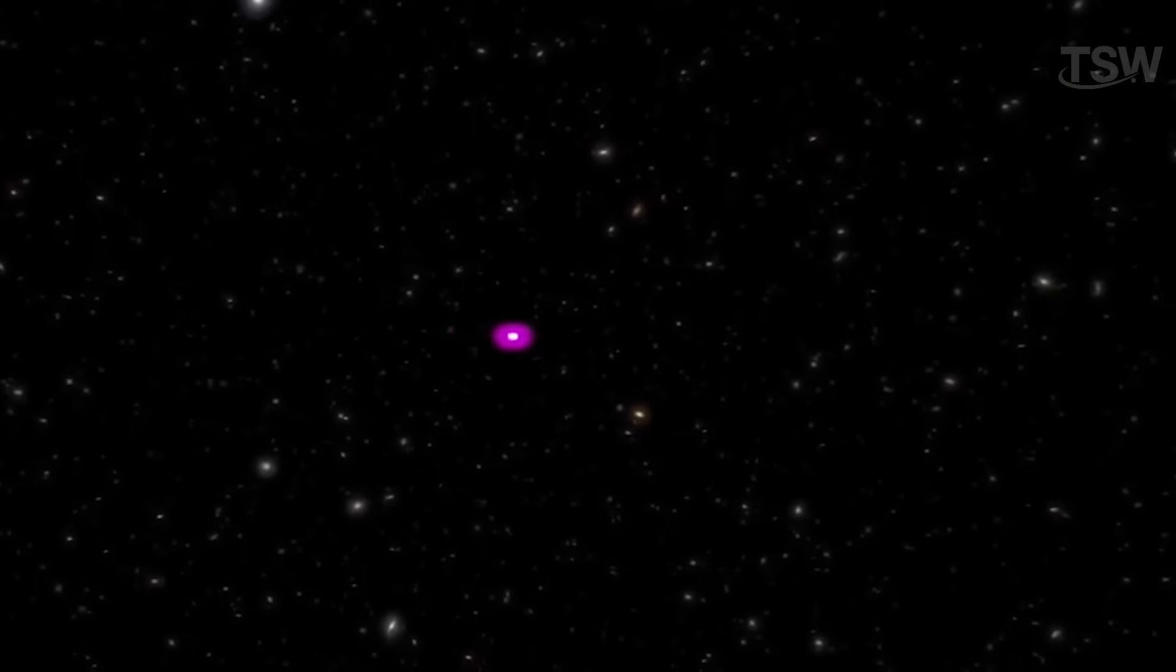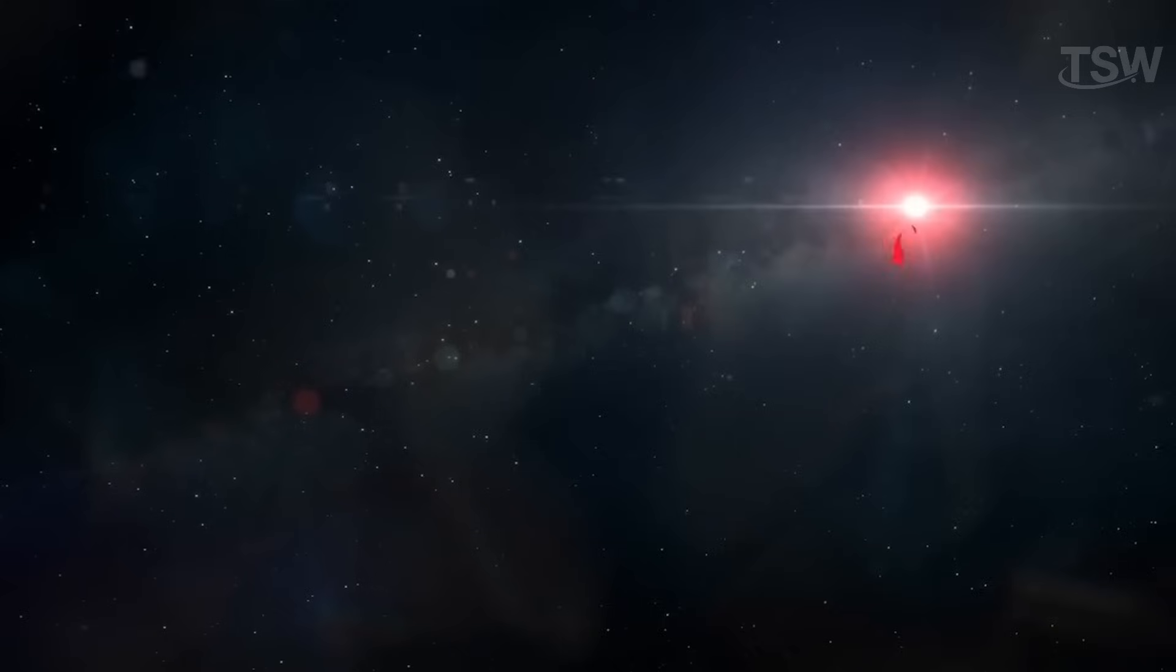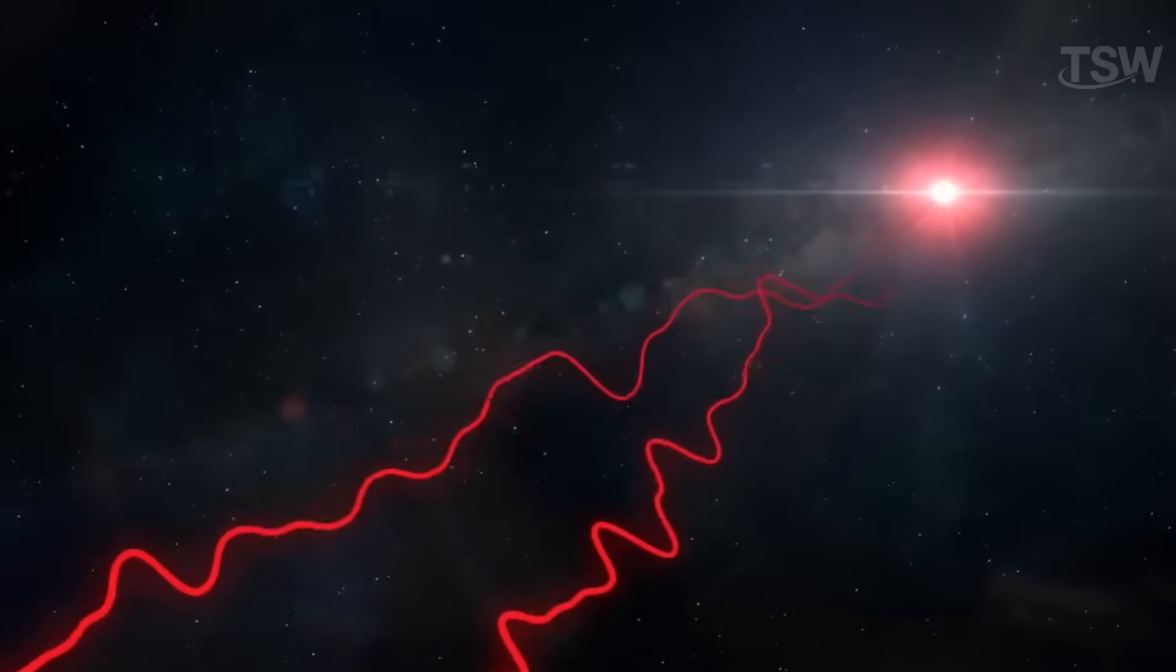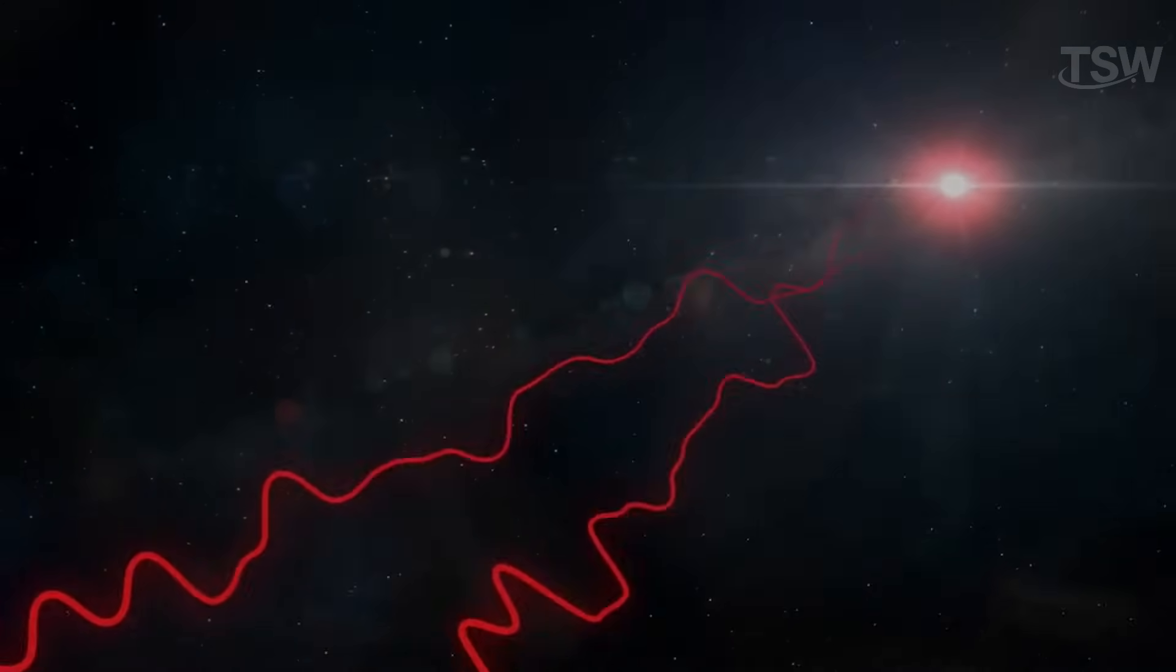This phenomenon explains why, even though the sun shines intensely in space, it doesn't light up everything around it. Light needs something to interact with. And since space is empty, there are no surfaces to reflect or scatter that light toward our eyes. As a result, without that redirected light, space appears completely dark to us.